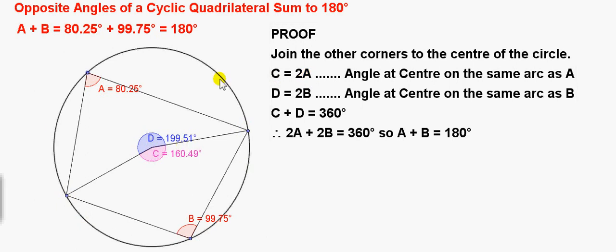Similarly, we consider this other arc. And we see that angle D stands on it. So angle D must be twice the angle at the circle standing on this arc here, going in the other direction. So angle D equals twice angle B.